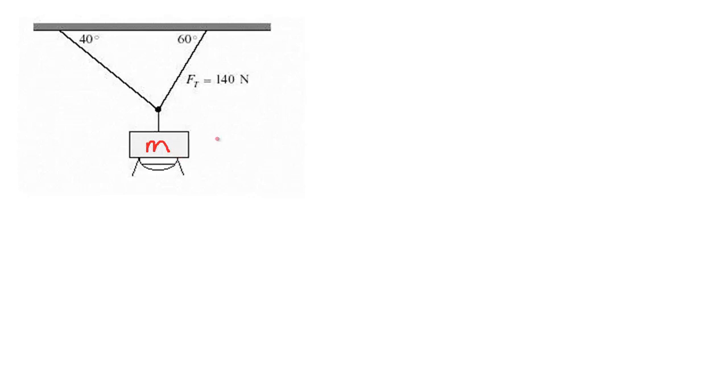Now they give us the tension in the right rope to be 140 newtons, but we don't know the tension in the left. We're going to use the component method to figure out what all these values are.